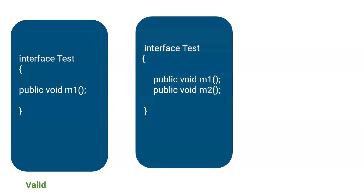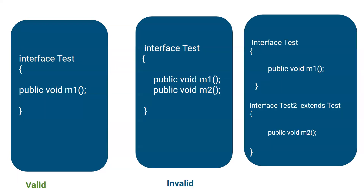Let's take another example. We have interface 'Test' which has two methods m1 and m2, both abstract. So is this a valid functional interface or not? No, this is not a valid functional interface because it contains two abstract methods. Now let's see the third example. Here we have one interface called 'Test' and another interface called 'Test2'. The Test interface is the parent and Test2 is the child. Is the parent interface Test valid? Yes, it is a valid functional interface because it has only a single abstract method.